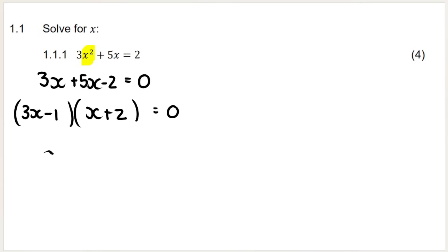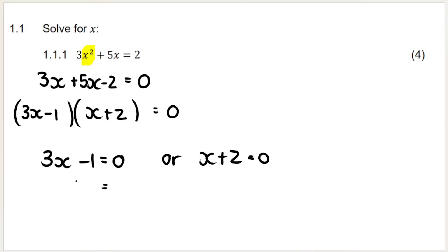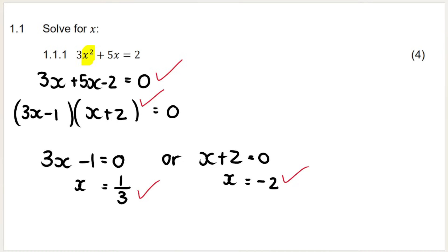We take each bracket and make it equal to zero. So 3x minus 1 equals zero, or x plus 2 equals zero. That means x equals one third, or x equals negative 2. The four marks come from standard form, factorizing, and then each of your answers.